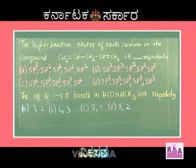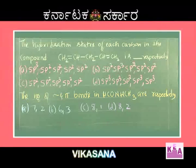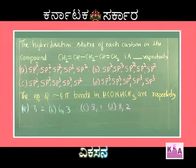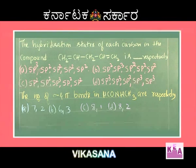The hybridization states of each carbon in the compound CH2=CH-CH2-CH=CH2 are — respectively.